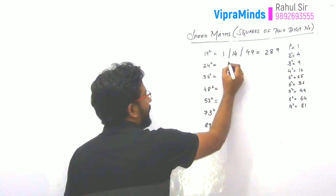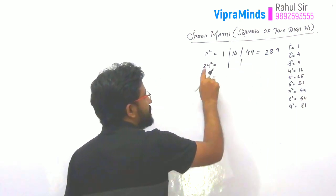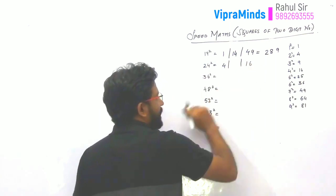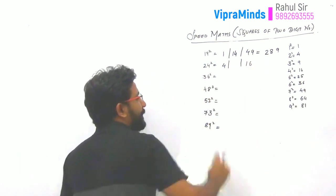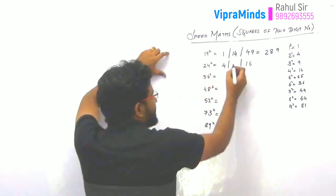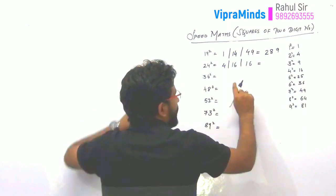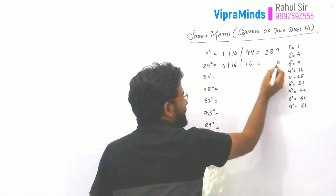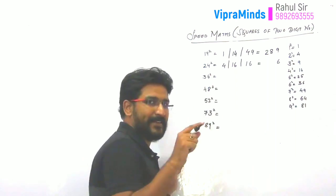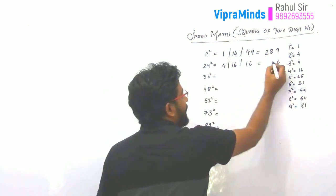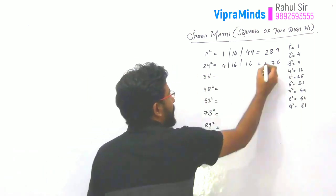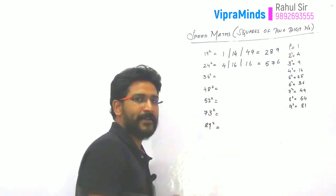We will see the next example: 24 squared. Again we will make three compartments. 2 squared is 4. 4 squared is 16. In the middle compartment, 2 into 4 is 8, and the double of 8 is 16. Write 6 as it is and carry forward 1. So 16 plus 1 is 17. Write only the unit place 7 and carry forward 1: 1 plus 4 is 5. So your answer will be 576.